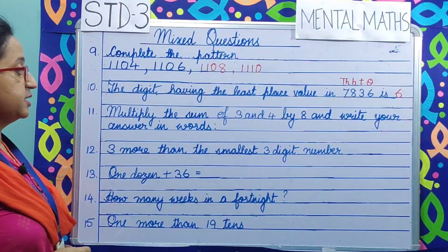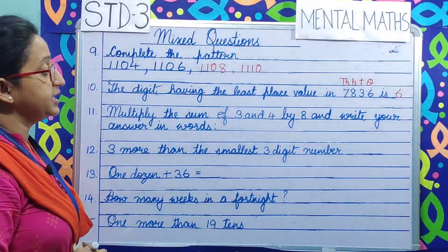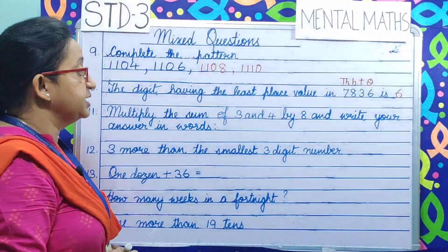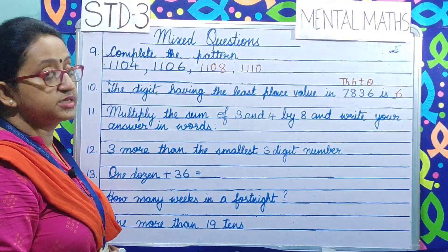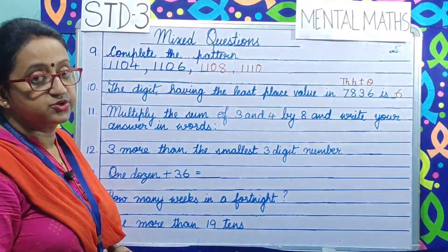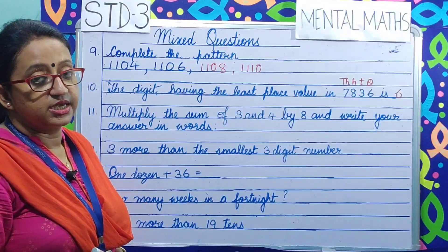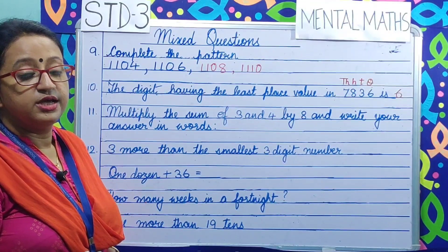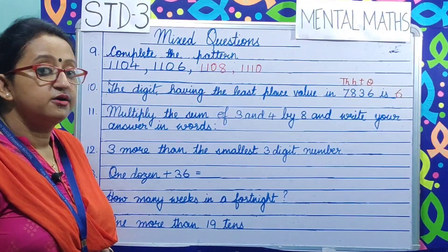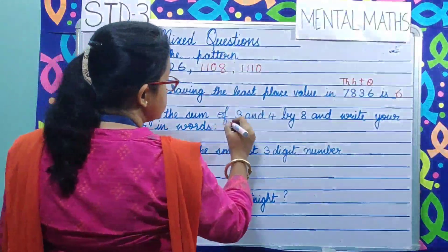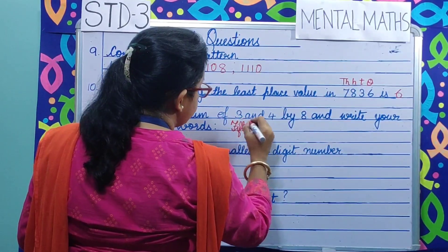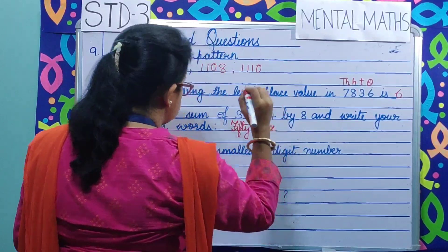Question number 11. Multiply the sum of 3 and 4 by 8 and write your answer in words. Sum of 3 and 4 means add them: 3 plus 4 is 7. Now 7 multiplied by 8 — reading the table of 8: 8 sevens are 56. So we write this in words: FIFTY SIX.